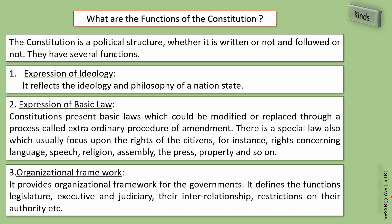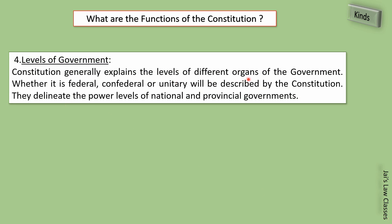Fourth function: Levels of government. The constitution explains the levels of different organs of government — whether federal, confederal, or unitary — and delineates powers at national and provincial levels. Within the government there are levels; in India, union power is more. Every ministry has its own field — sports, welfare, petroleum, finance, home ministry — and which level is higher or subordinate is described in the constitution.